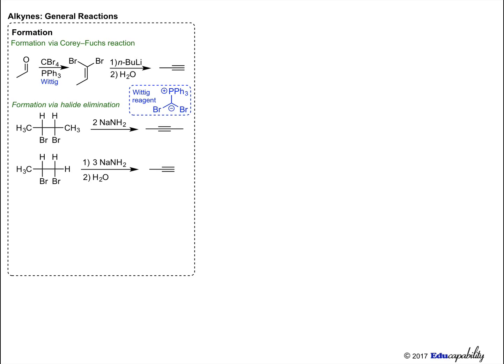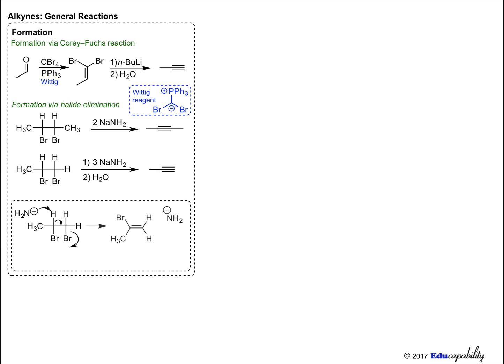Let's examine why by looking at the mechanism. The first molar equivalent of sodium amide deprotonates the molecule and causes elimination of bromine, forming an intermediate alkene. The second equivalent repeats this process, creating the alkyne. Terminal alkynes have a pKa of about 24, which makes them acidic enough to be deprotonated by sodium amide. The third equivalent deprotonates the terminal H atom, creating an anion, which is why water is needed in both reactions that form terminal alkynes.